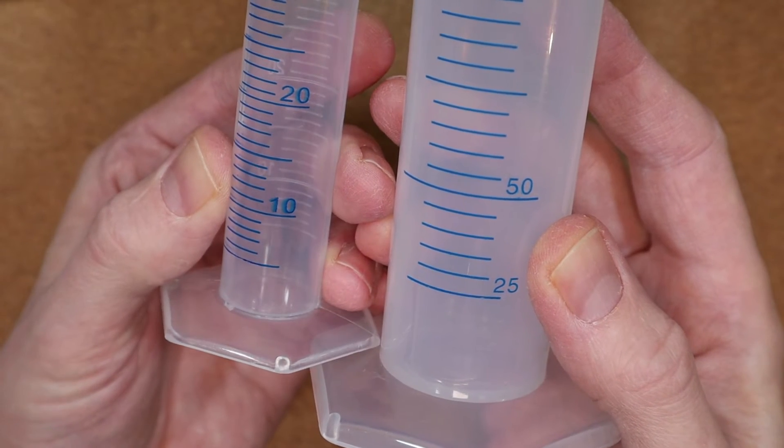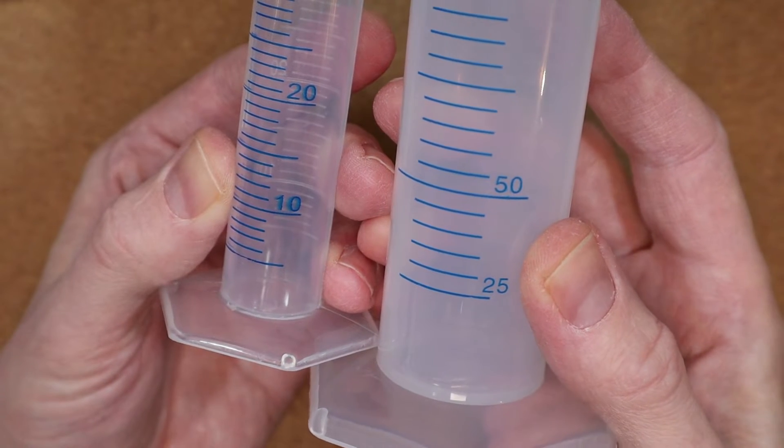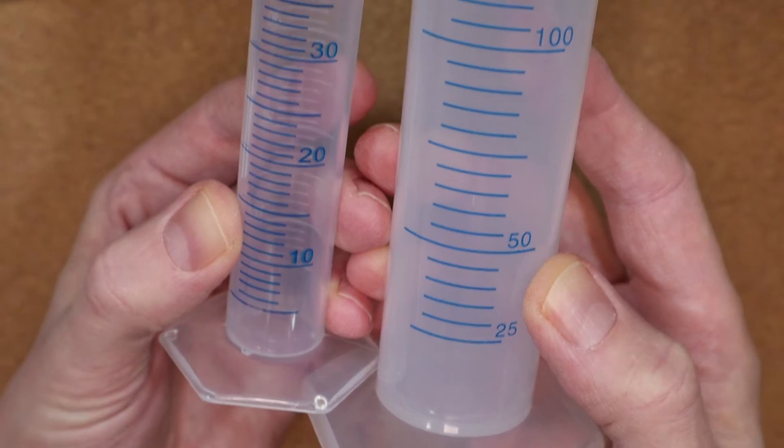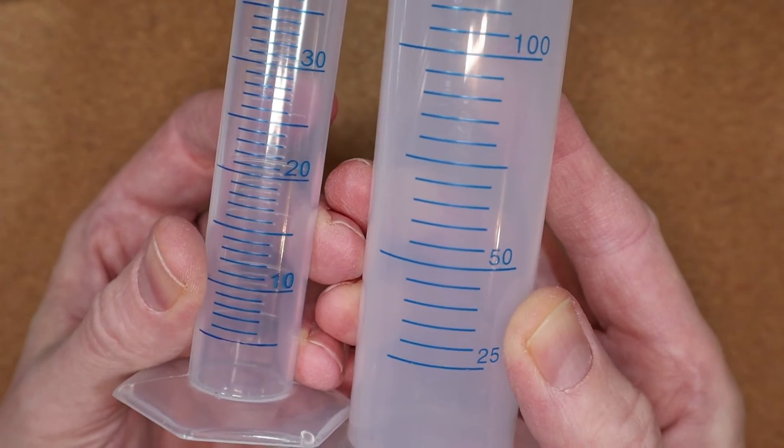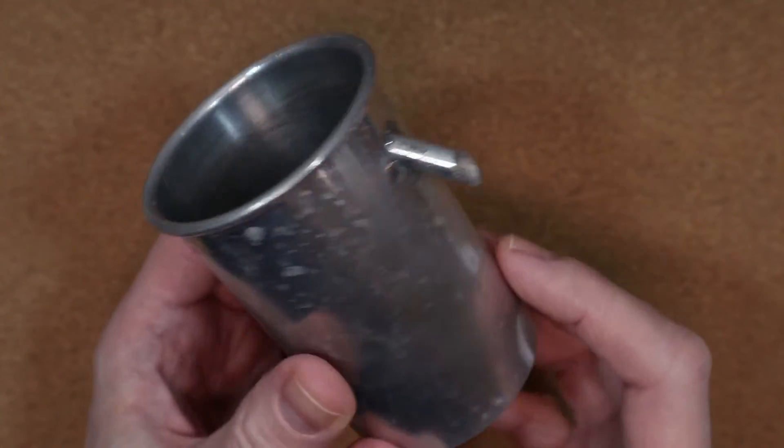The measuring cylinder on the left here has scale divisions that increase by one milliliter each time, but the larger measuring cylinder on the right has a scale that increases by five milliliters each division. That's why I'm going to use a different method known as the Eureka can, also known as the Displacement can or Density can.